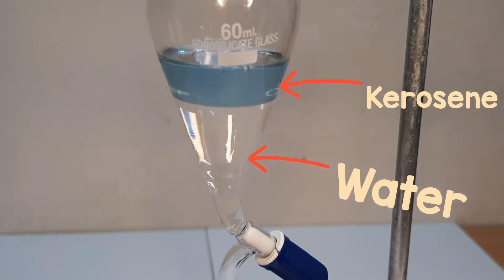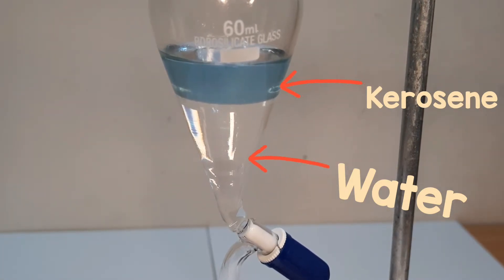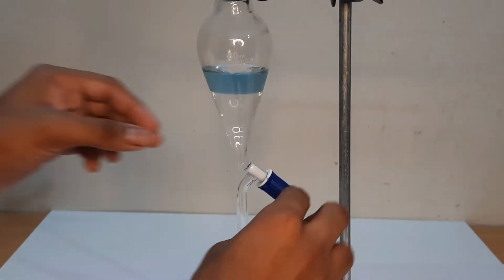Water being heavier forms the lower layer in the separating funnel, whereas kerosene being lighter forms the upper layer.